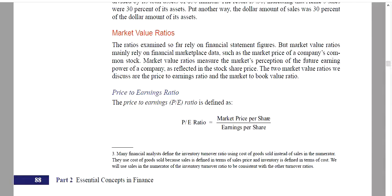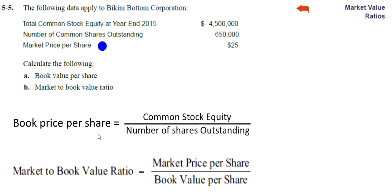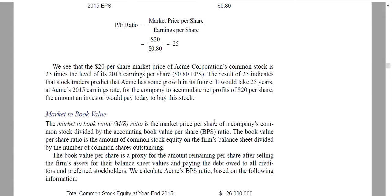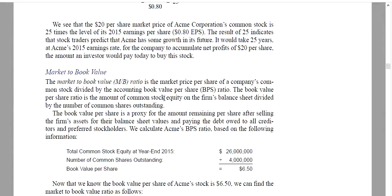In your book on page 88, it talks about market value ratios. The key is that market value ratios measure the market's perception of the future earning power of a company as reflected in the stock share price. For this problem, we're looking at book price per share and the market-to-book value ratio. The market-to-book ratio is the market price per share of a company's common stock divided by the accounting book value per share.